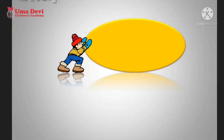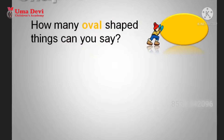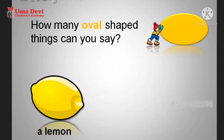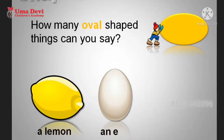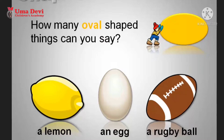Let's talk about the shape of oval. How many oval-shaped things can you say? A lemon, an egg, and a rugby ball. So we talked about oval also.